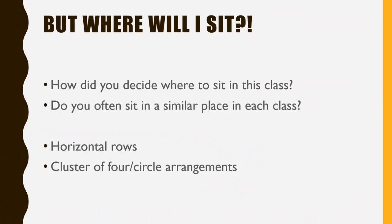We also spoke about the importance of where students sit and how that can have a monumental impact on their learning — even though it's something we might not consider too crucial. We discussed two different ways to organise your classroom: horizontal rows versus a cluster-of-four or circle arrangement. It's important that you're able to identify what these different arrangements look like, come up with examples of when each might be appropriate, and when each might not be the best-suited arrangement for your classroom.